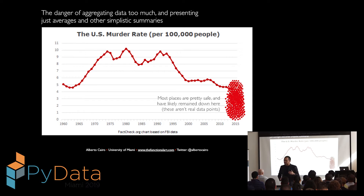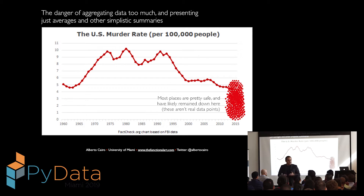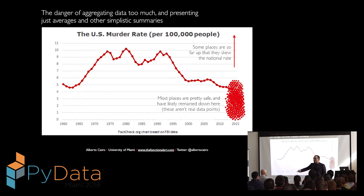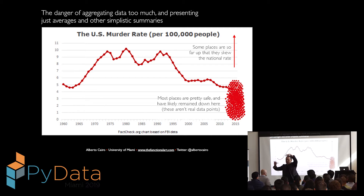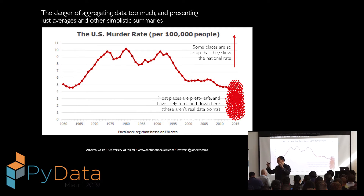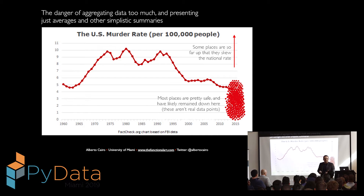The problem is outliers. Most places in the United States are quite safe — in my neighborhood in Kendall, Miami, there has been one murder in the past six years. Most cities and towns would plot very low on that chart. But certain neighborhoods in big and mid-sized cities have become so dangerous in the past four or five years that they basically distort the national rate. If you could plot those places, they would go through the roof. Those outliers act as magnets, pulling the line upward. Showing only the national average misinforms people — you need to also explain the role of those outliers to enable an informed conversation.